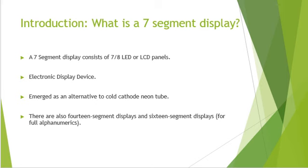Let me give you a brief introduction of what a 7-segment display is. A 7-segment display basically consists of 7 or 8 LED or LCD panels. It's an electronic display device used for displaying decimal numbers or certain ASCII characters, and it is an alternative to dot matrix displays or cold cathode neon tubes.